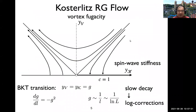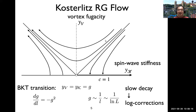The BKT transition has been understood theoretically very well by the Kosterlitz RG. This is one of the most remarkable applications of the renormalization group. There are two almost marginal couplings: one is the spin wave stiffness, and the other is the vortex fugacity. You need to track the RG flow in this two-dimensional parameter space.